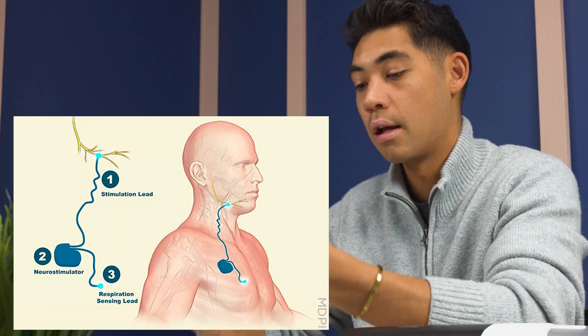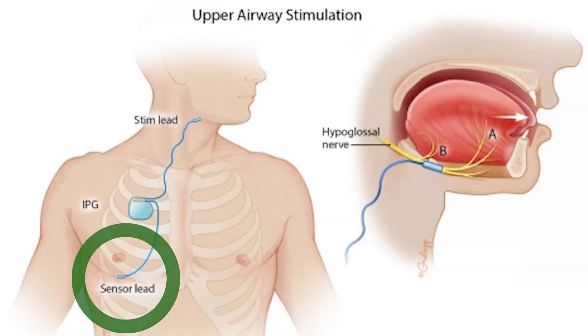You also have hypoglossal nerve stimulators — devices implanted in your body, placed near the area of a pacemaker. One part is a sensing lead that detects when you're about to take a breath; another is a stimulation lead near the throat that stimulates the tongue muscles to contract and move the tongue forward, clearing the airway. Every time you're about to inhale, the device senses it, sends a small stimulation, your tongue moves, and air can flow down your throat. The implantation requires surgery, but it's considered minimally invasive.